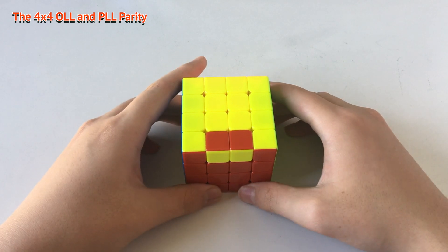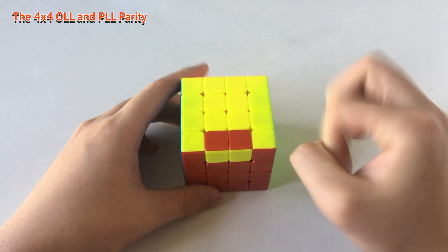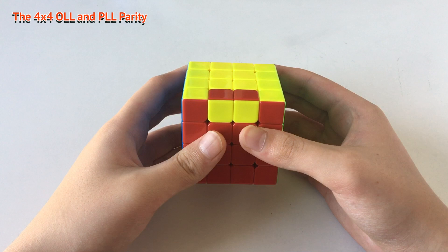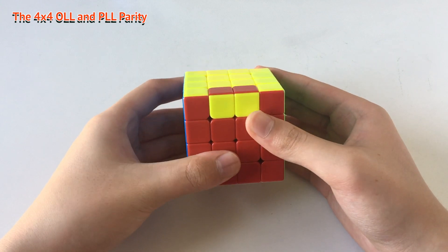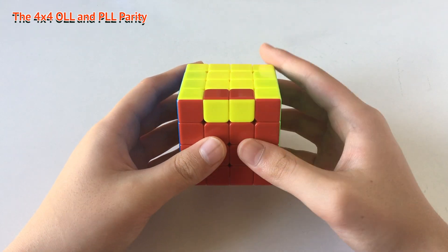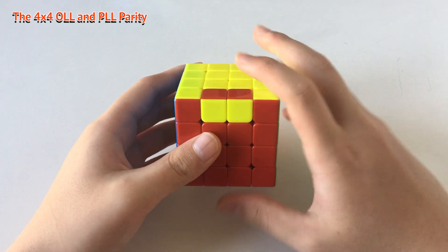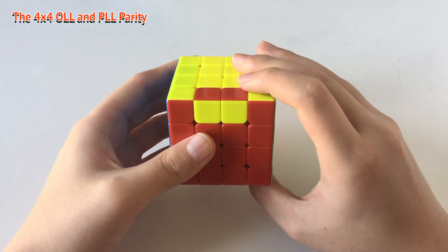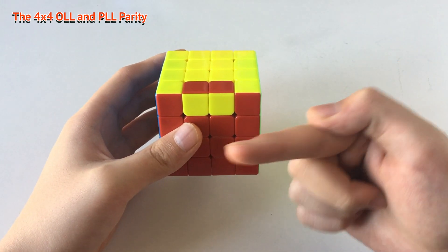So this is how we actually solve a 4x4 OLL parity case. This is the most common algorithm, and I think the fastest algorithm too. I will also be teaching you some finger tricks, so follow me along. The algorithm will be listed right here.